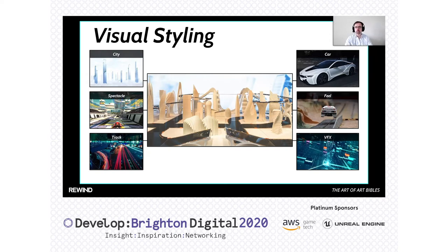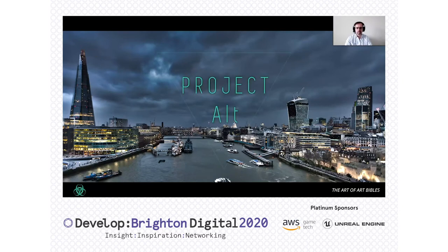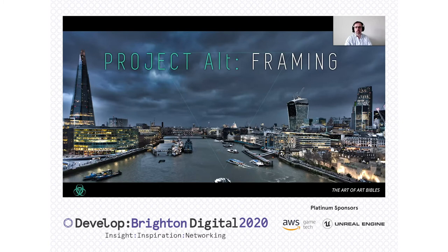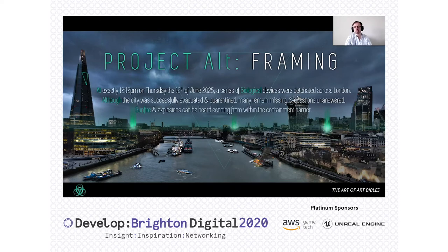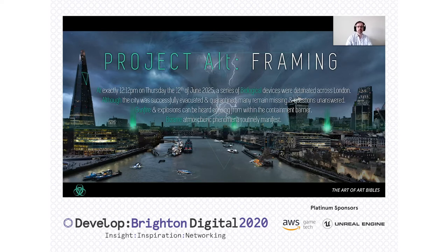Let's have a look at the Project Alt example. We're going to start by running through some framings to establish the vision. The project's framing is effectively the when and the where — it gives us our narrative and location. In this particular case, a series of biological and radiological devices are detonated across London. Although the city was successfully evacuated and quarantined, many remain missing and questions unanswered. Gunfire and explosions can be heard echoing from within the containment barrier, and bizarre atmospheric phenomena routinely manifest. That gives us our narrative framing and a flavour of what's going to be coming.